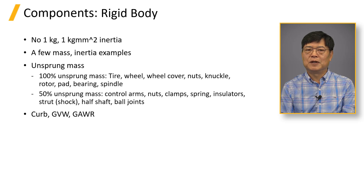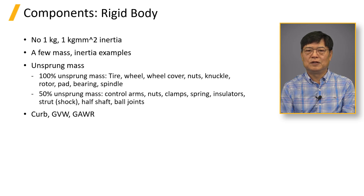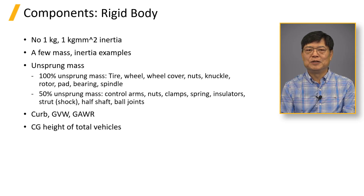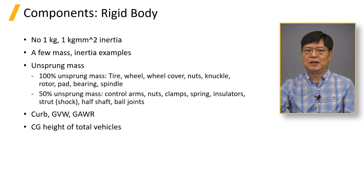In early vehicle development, the vehicle program team sets the mass target for curb weight, GBW, and GVWR. This target changes with design changes as the vehicle program proceeds. CG height data is not readily available; historical data could be utilized until hardware measurements become available. Regression tools using historical data ought to be a good source of reasonable data. Engineers should be aware that electric vehicles manifest very different CG height data due to heavy battery weight on the floor.